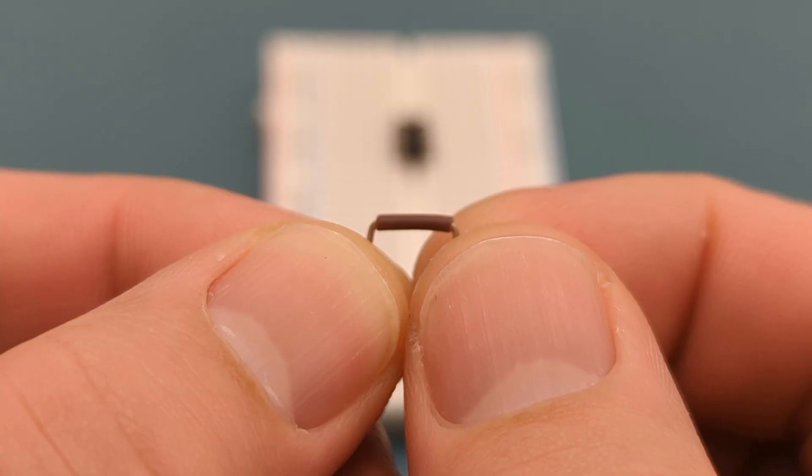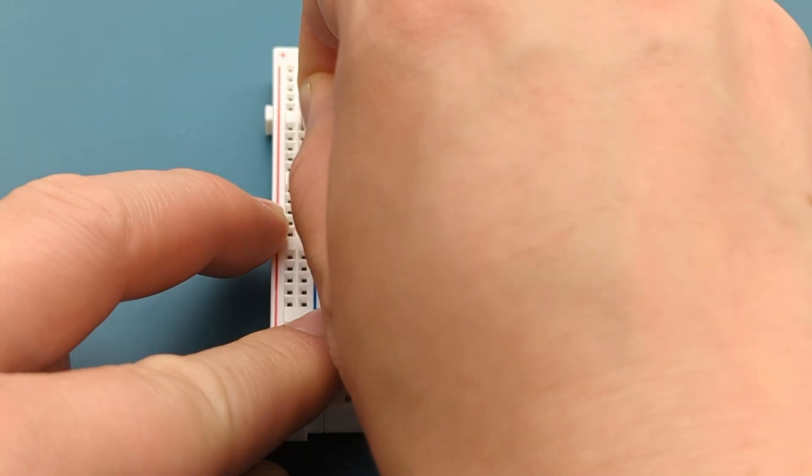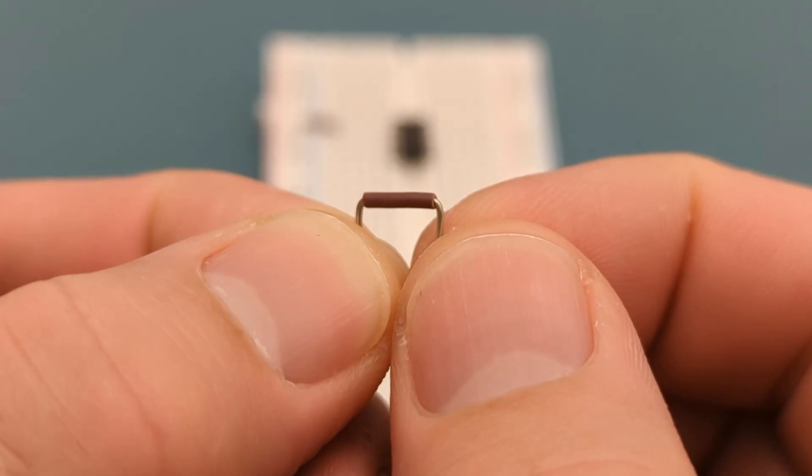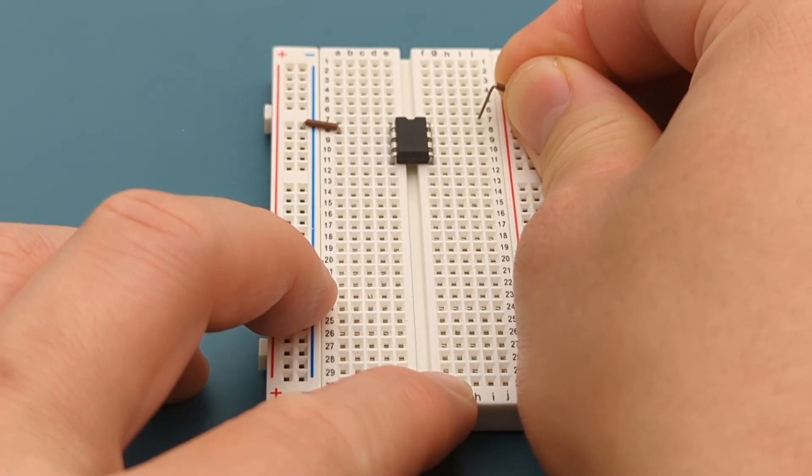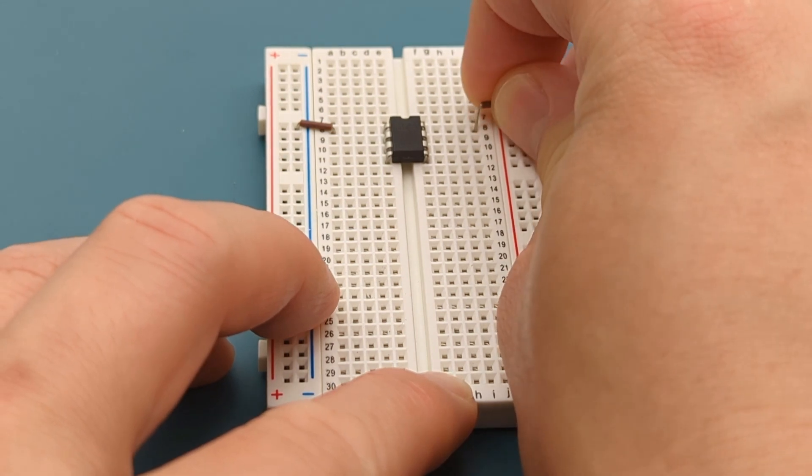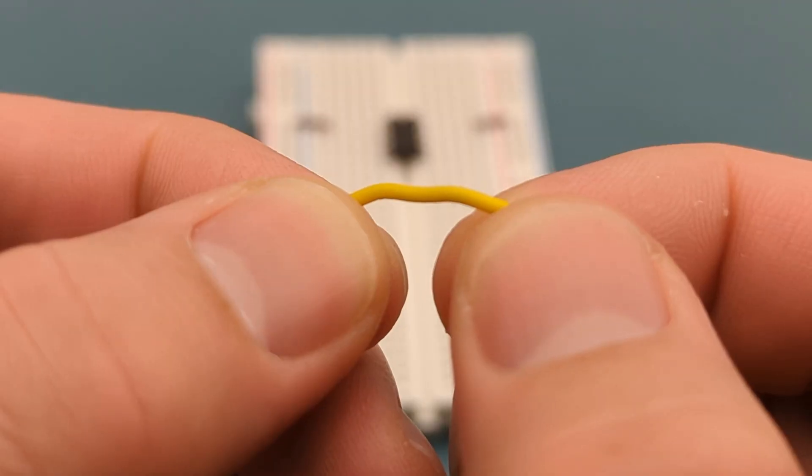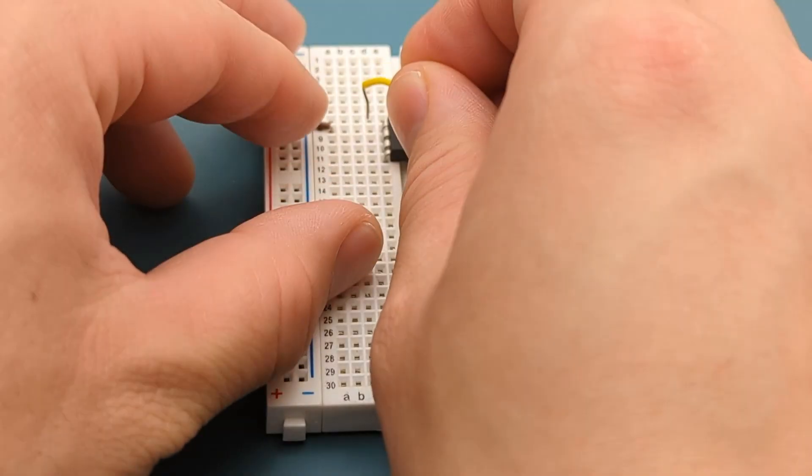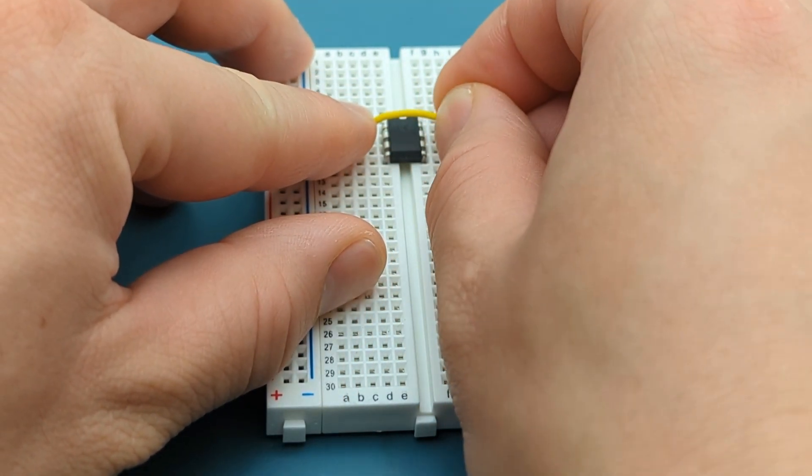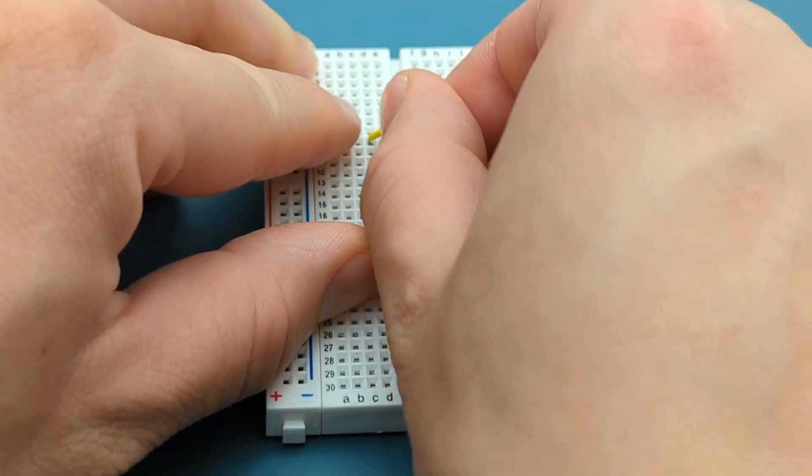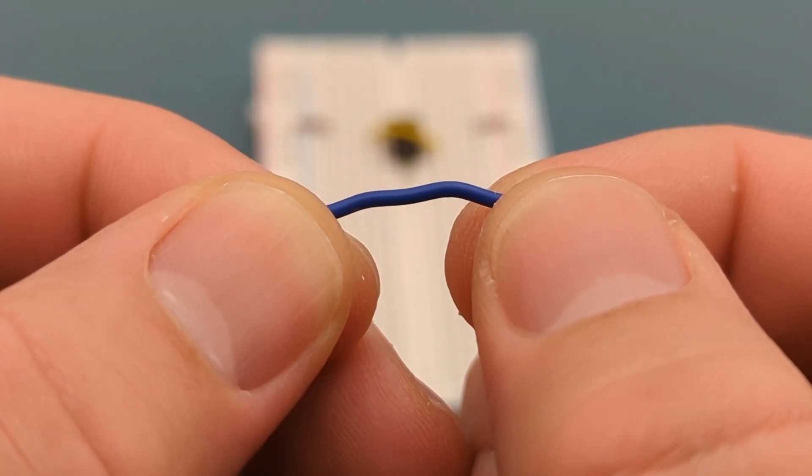A jumper wire connects pin one or ground to the negative rail. A jumper wire connects pin eight or VCC to the positive rail. Use a jumper wire to connect pin two or trigger to pin six or threshold. Use a jumper wire to connect pin four or reset to pin eight or VCC.